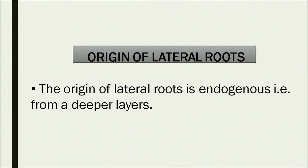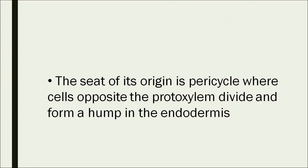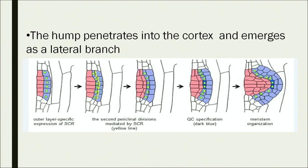The origin of lateral roots is endogenous — from deeper layers — and the seat of origin is the pericycle, where cells opposite the proto-xylem divide and form a hump in the endodermis. In the figures, the first shows pink and blue layers starting to divide; in figure three, four layers have formed and a hump starts appearing. In the last figure, the meristem gets organized and the lateral root starts developing from the deeper layer of cells, penetrating through the cortex and emerging as a lateral branch of the root.